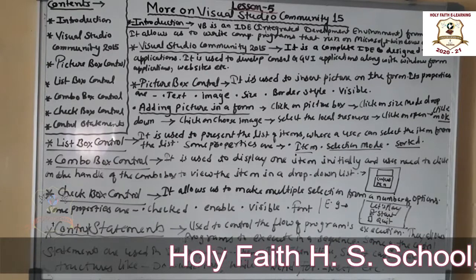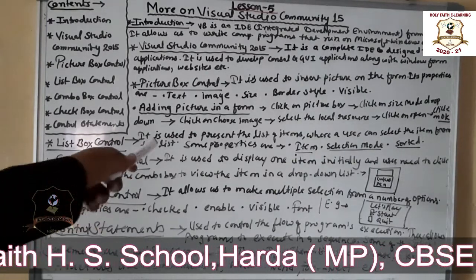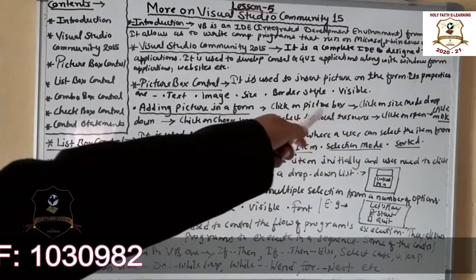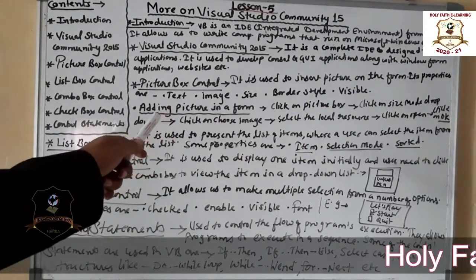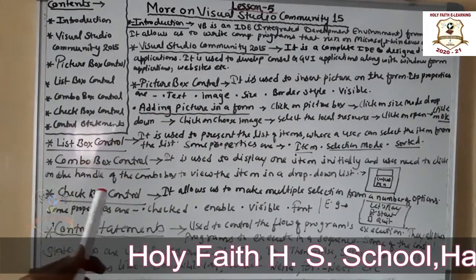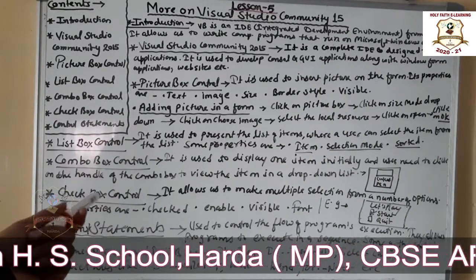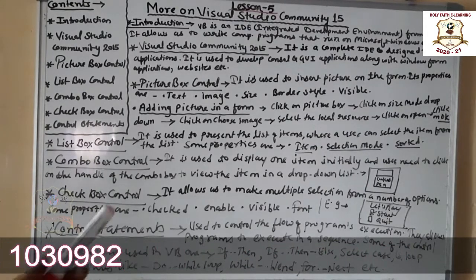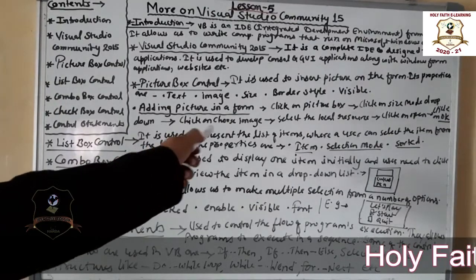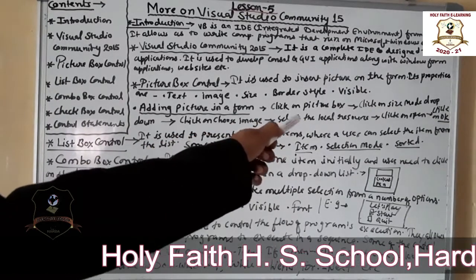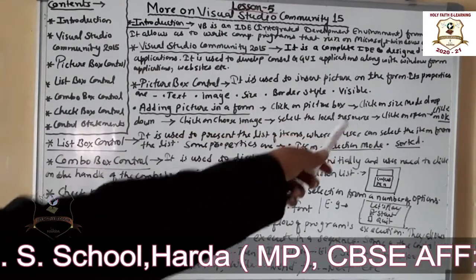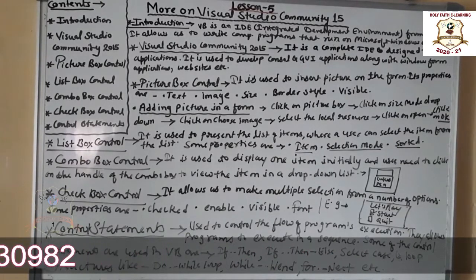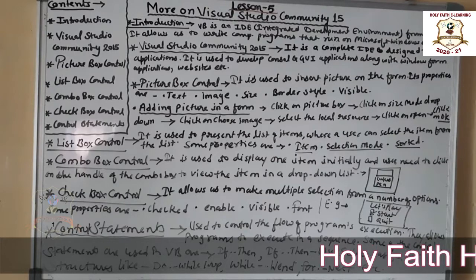To add a Picture Box control, click on the Picture Box, then click on the Size Mode drop-down list and select one of the options: Normal, Stretch Image, Auto Size, Center Image, or Zoom. Then click on Choose Image, select the local resource from your computer, click the Open button, and finally click OK. We will also demonstrate this in practical sessions.